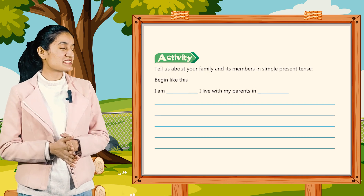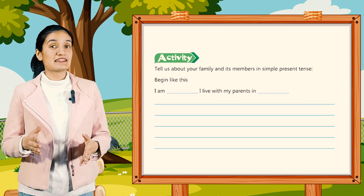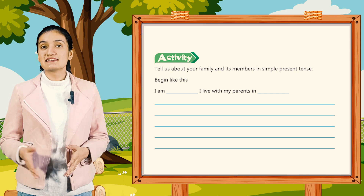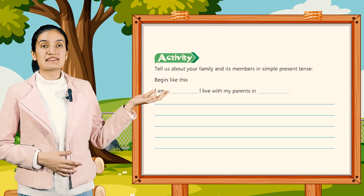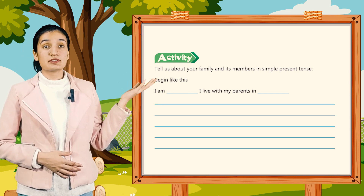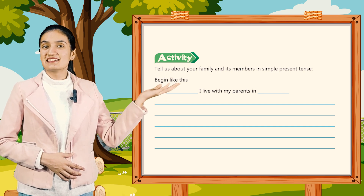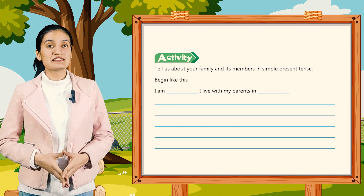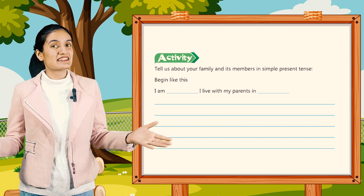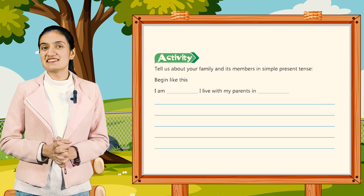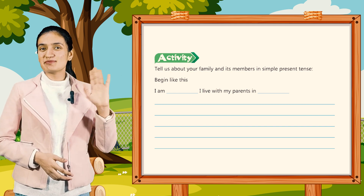Now let's do the activity: tell us about your family and its members in simple present tense. Begin like this — I am dash. I live with my parents in dash. So you have to tell us about your family. That's all for today's class, kids. We will meet in the next class. Till then, bye-bye.